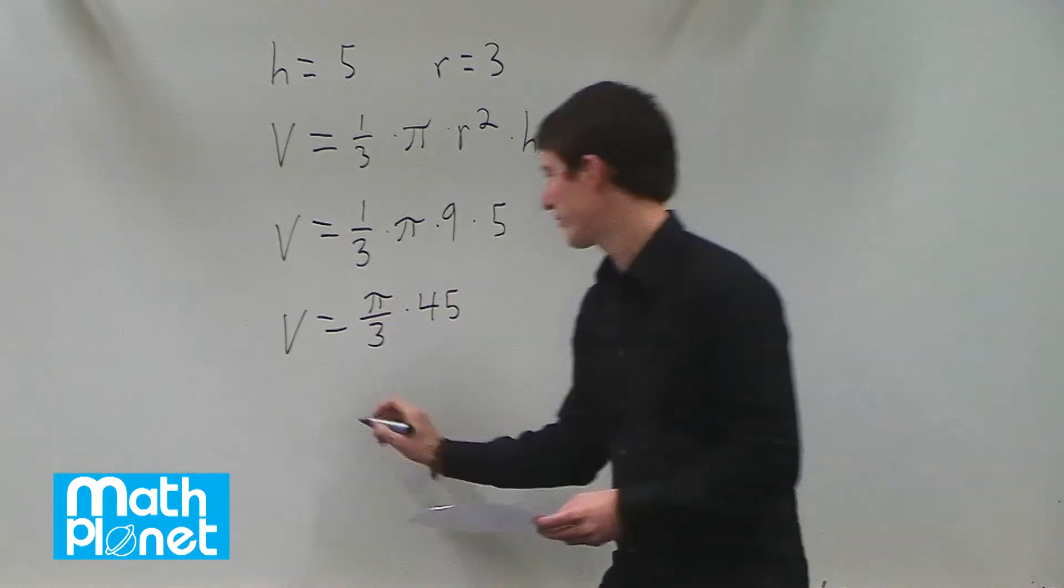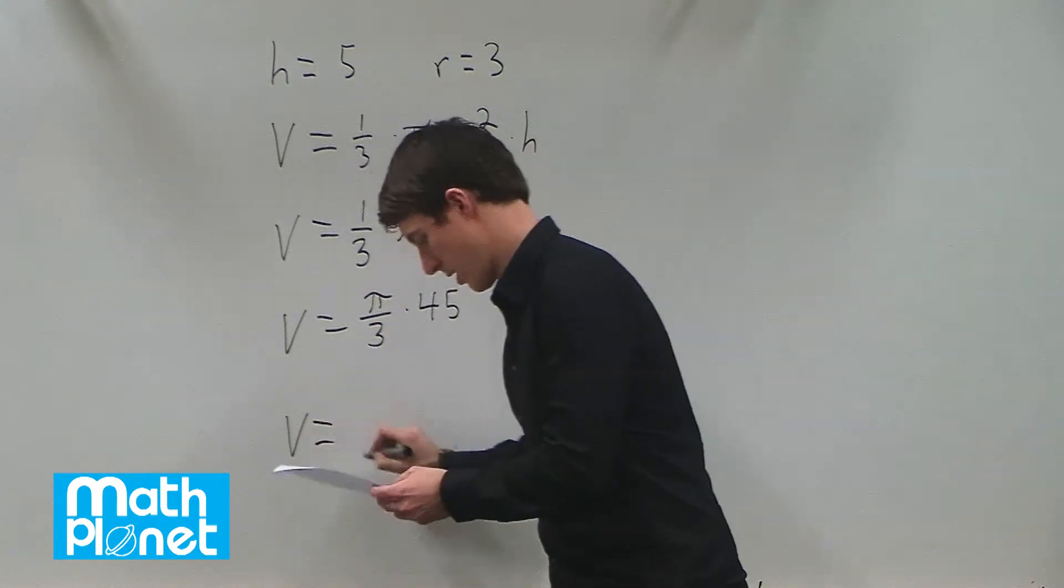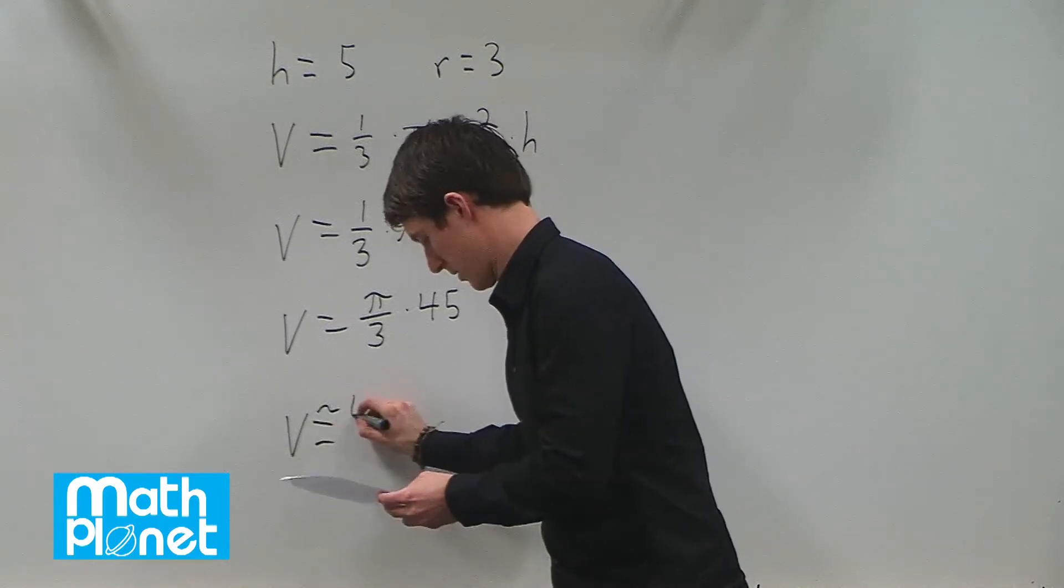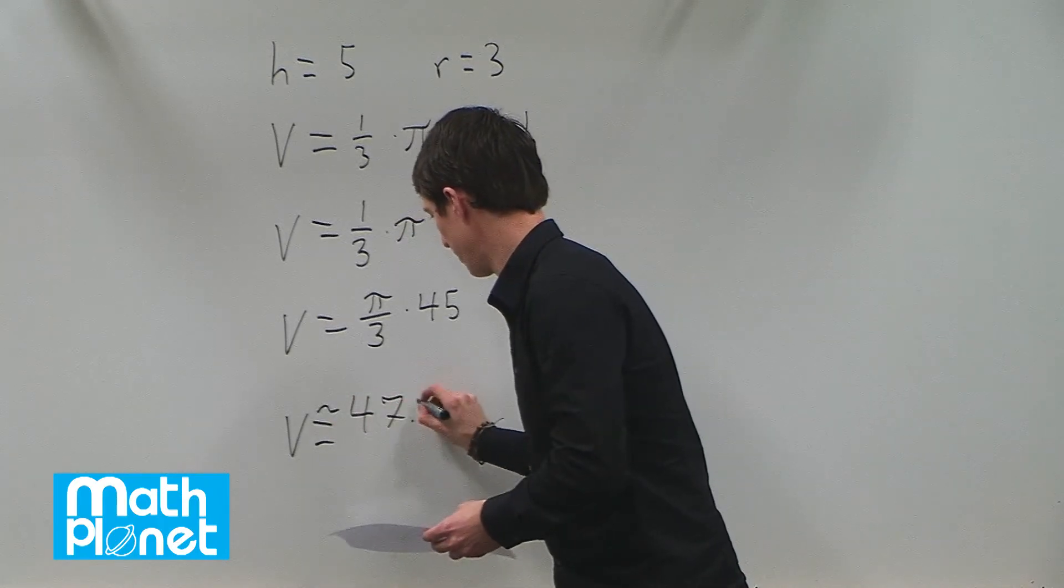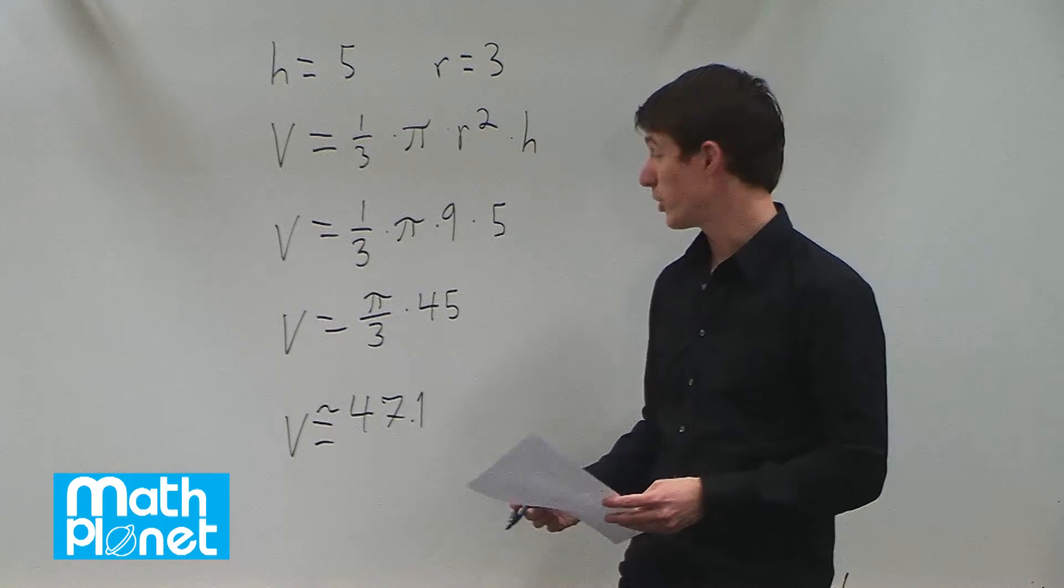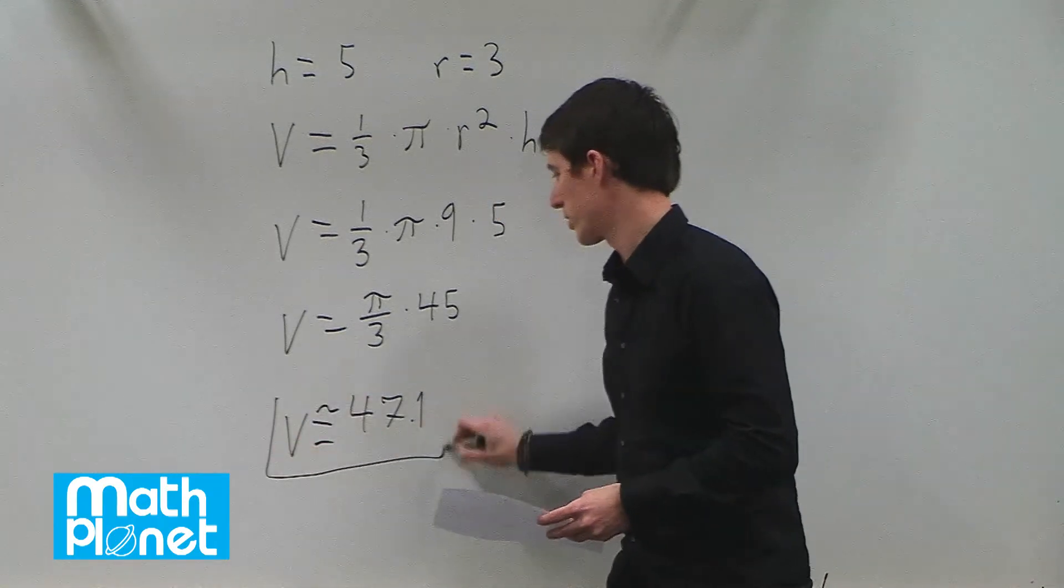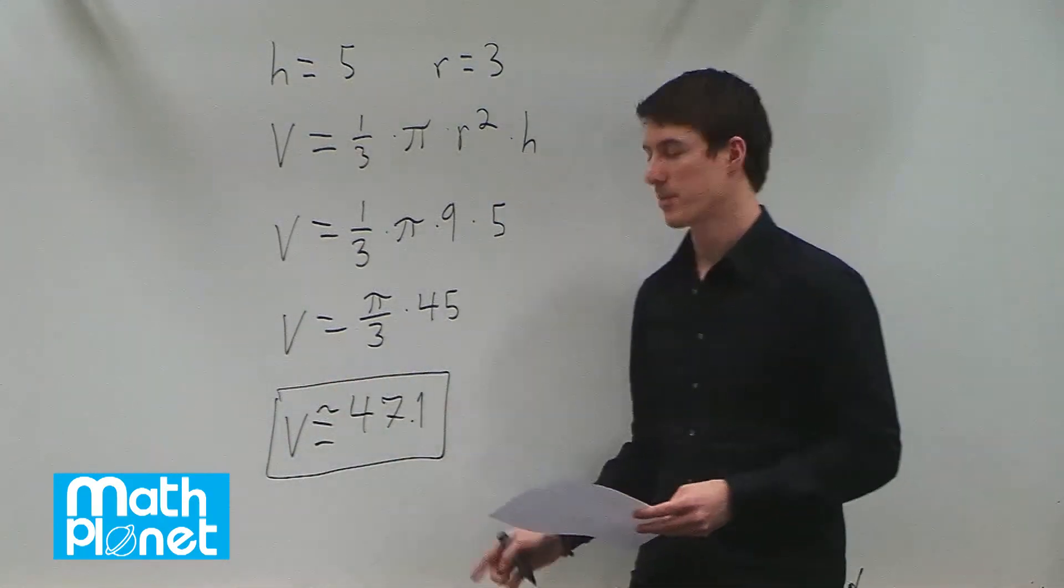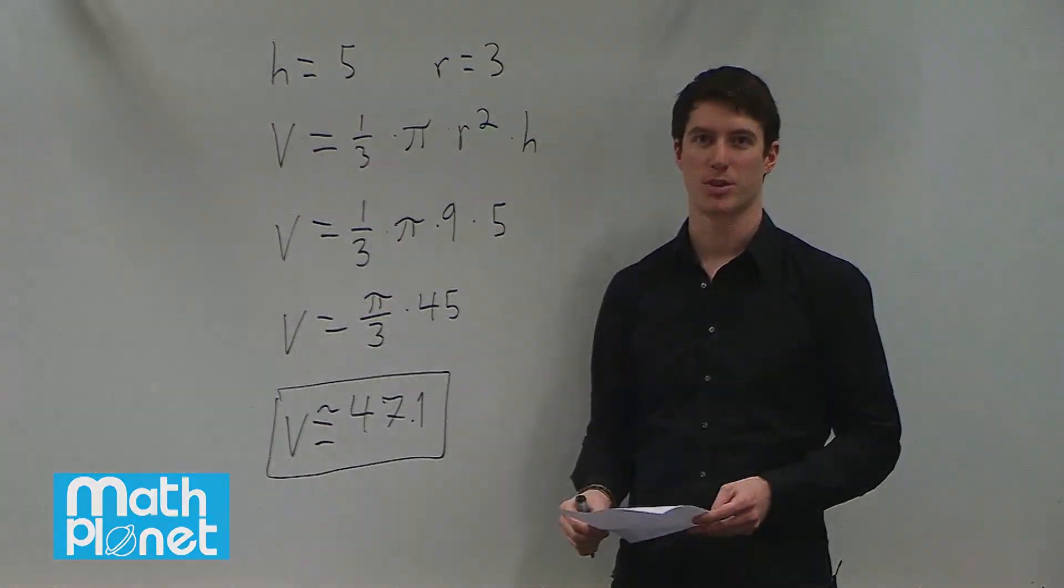And if we multiply all this out finally we get a volume of approximately 47.1 cubic units. So whatever units they're in, meters, feet, whatever it may be, 47.1 cubic units.